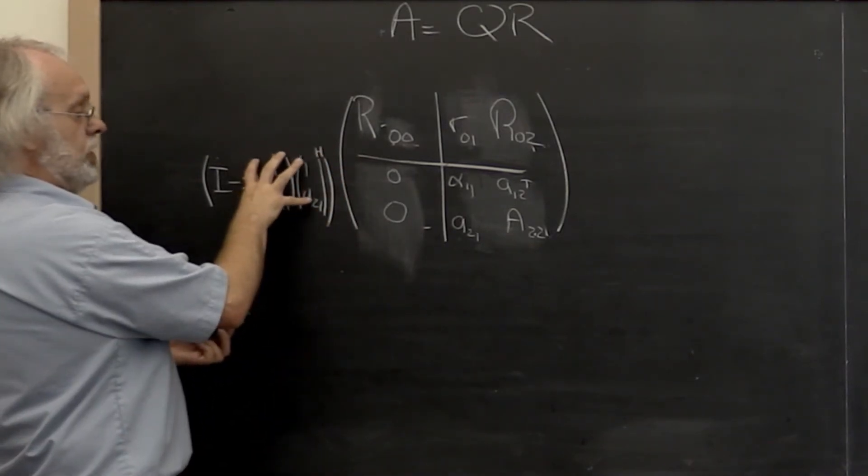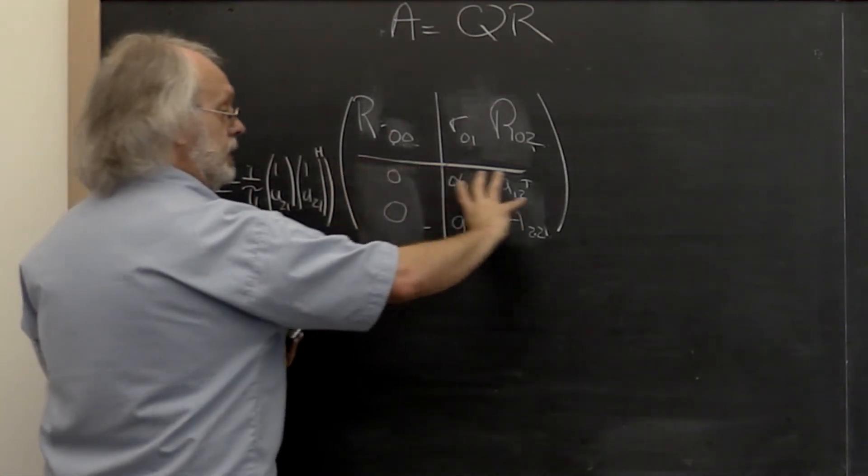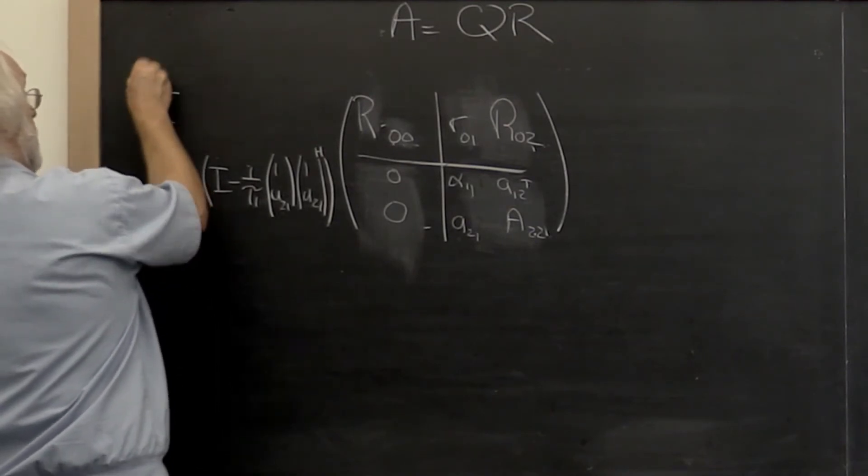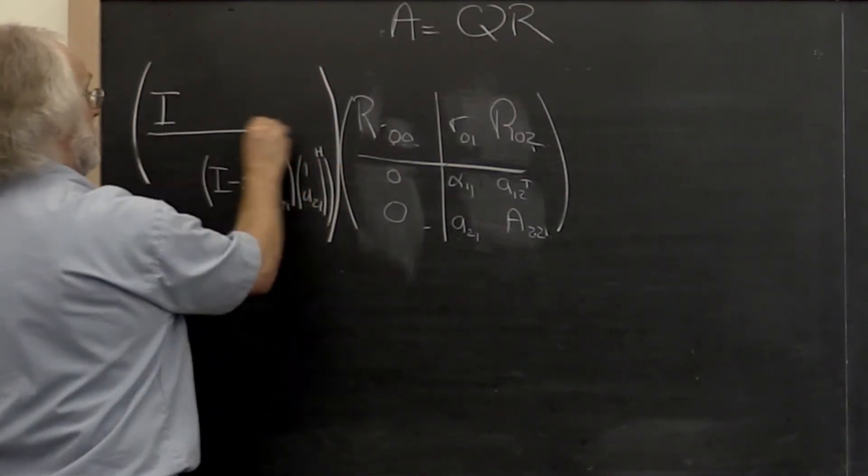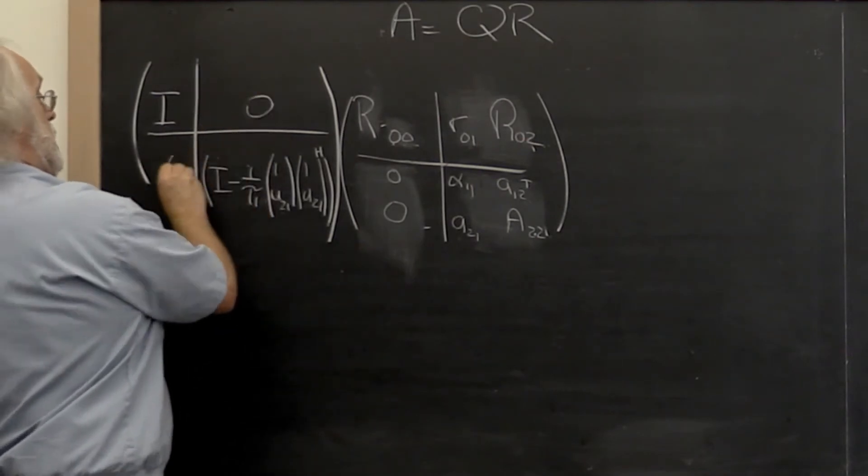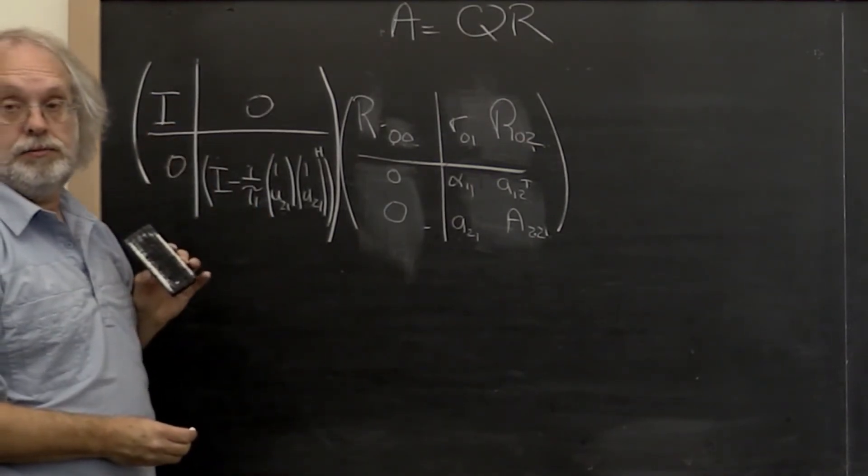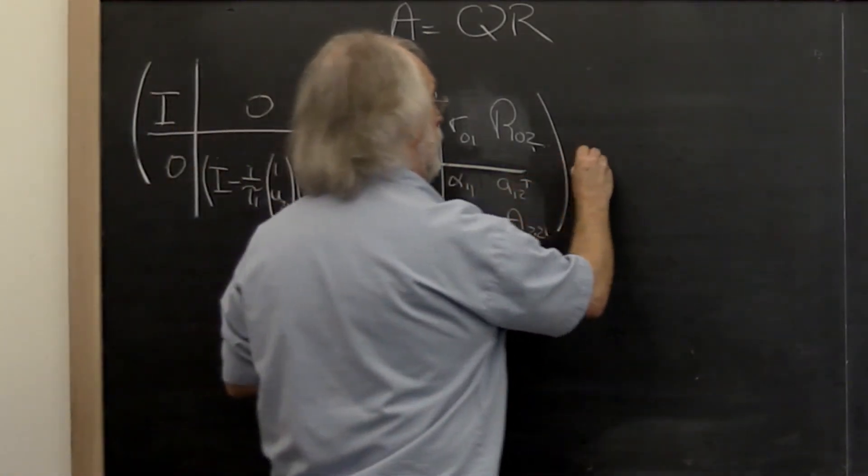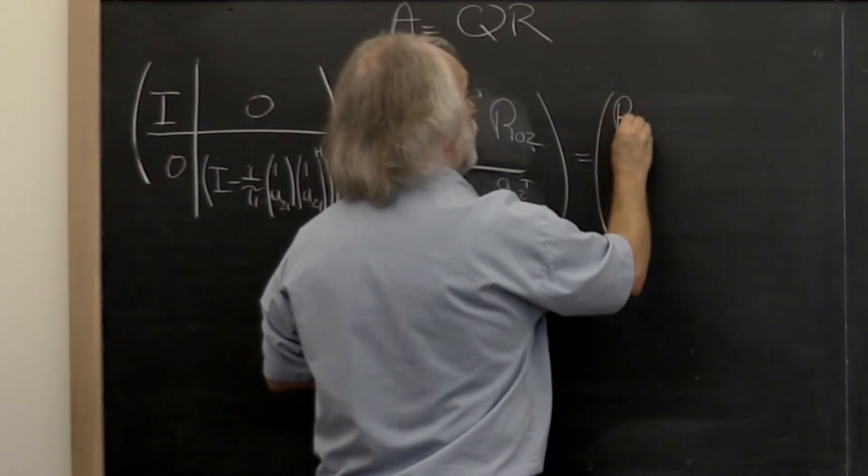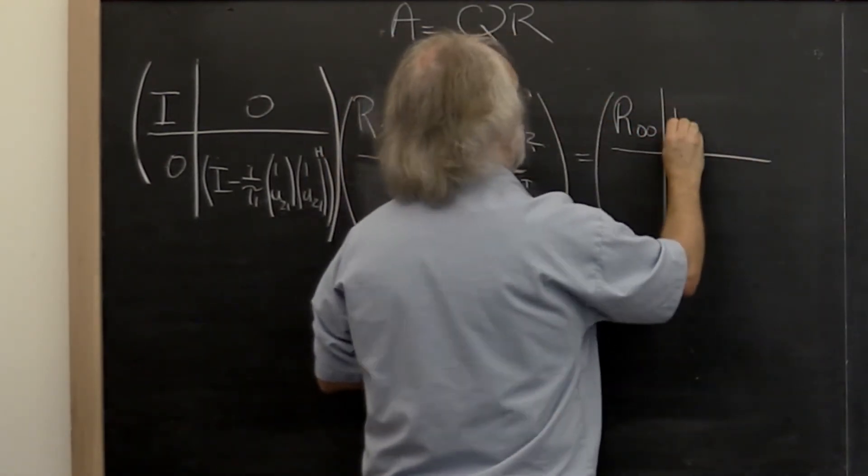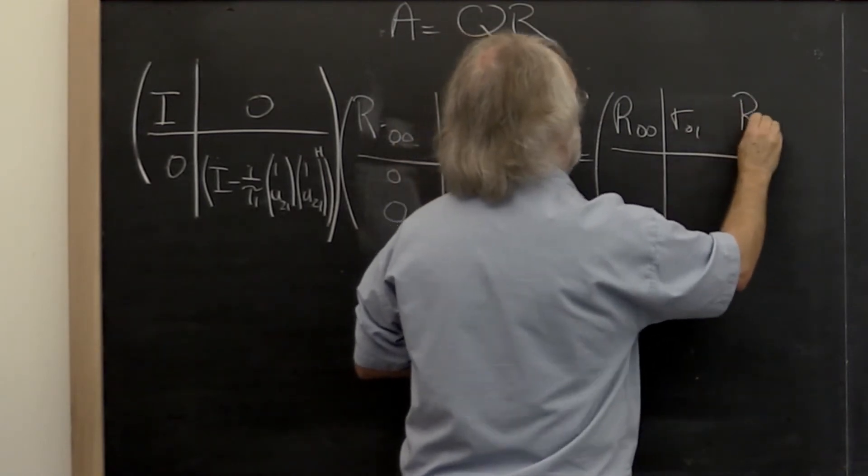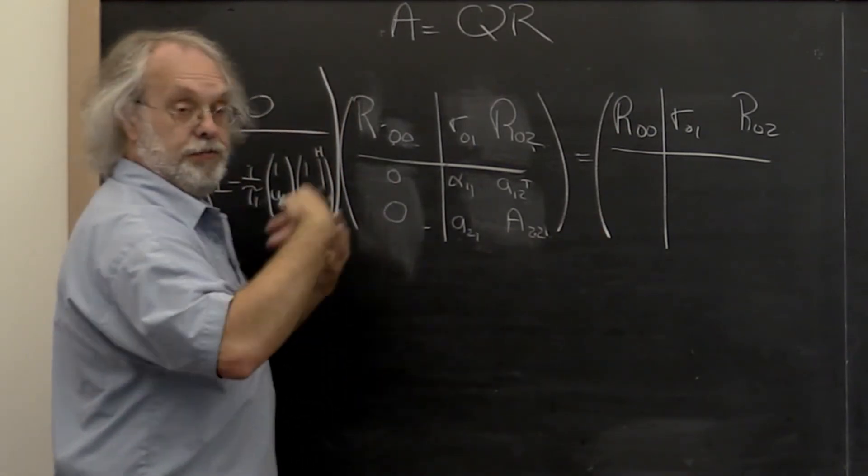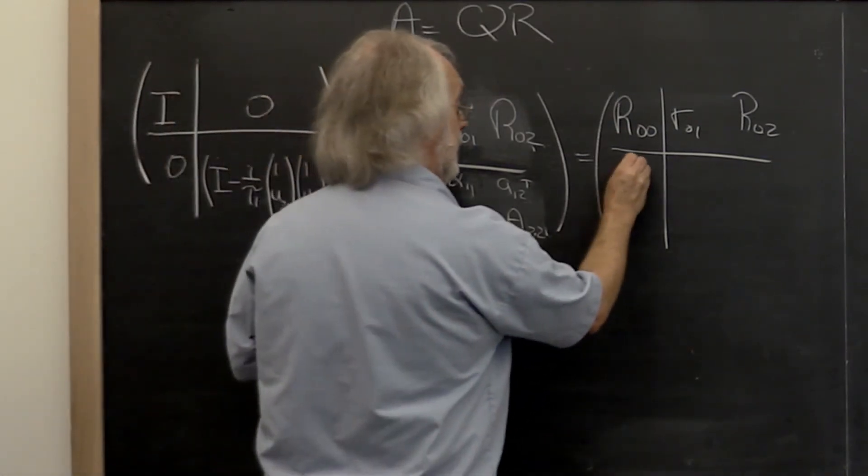Now we want that Householder transform to only apply to the bottom set of rows. Therefore this, really strictly speaking, is part of a bigger matrix where we have an identity here and zero blocks right there. When we apply that to this matrix we know that the first blocks of rows are left alone by design. We know that these blocks of zeros are multiplied by this, but if you multiply zeros by anything you get zeros back.